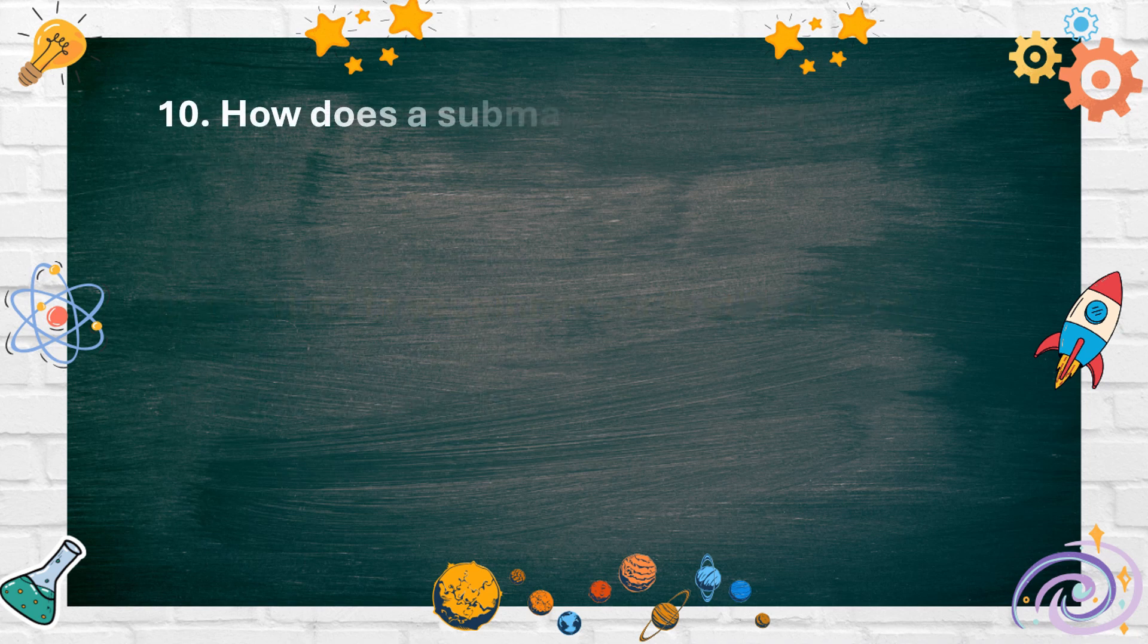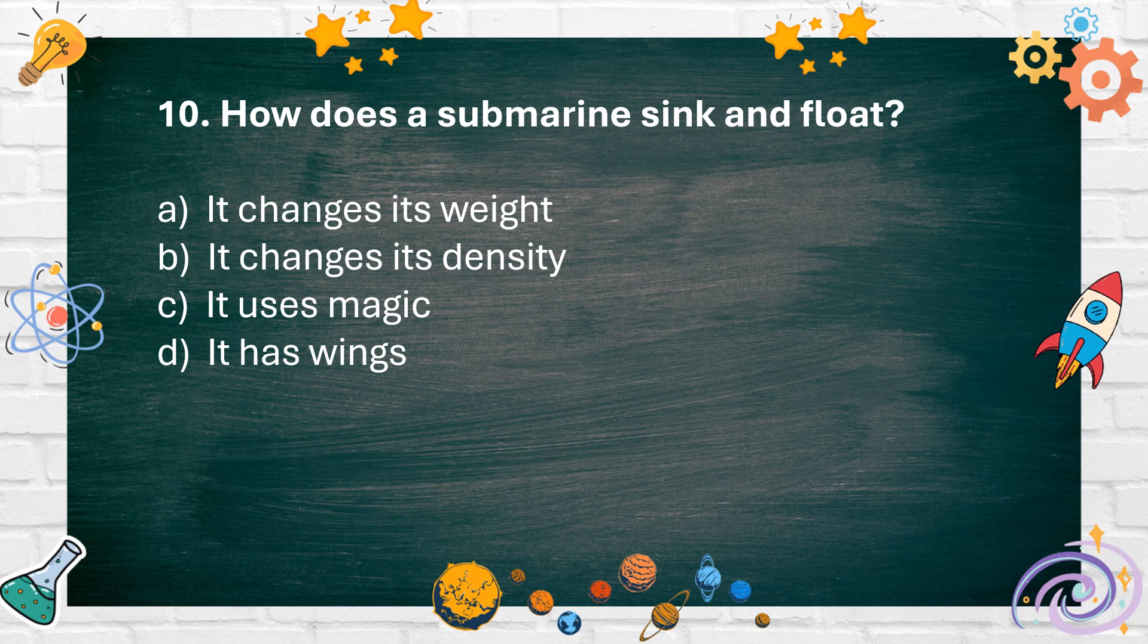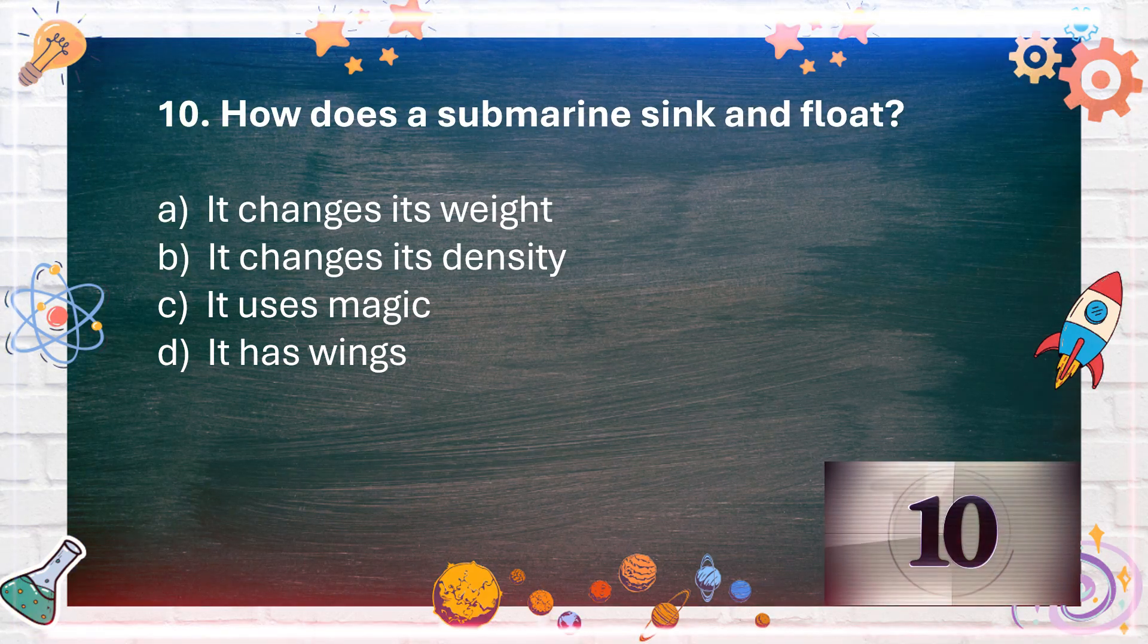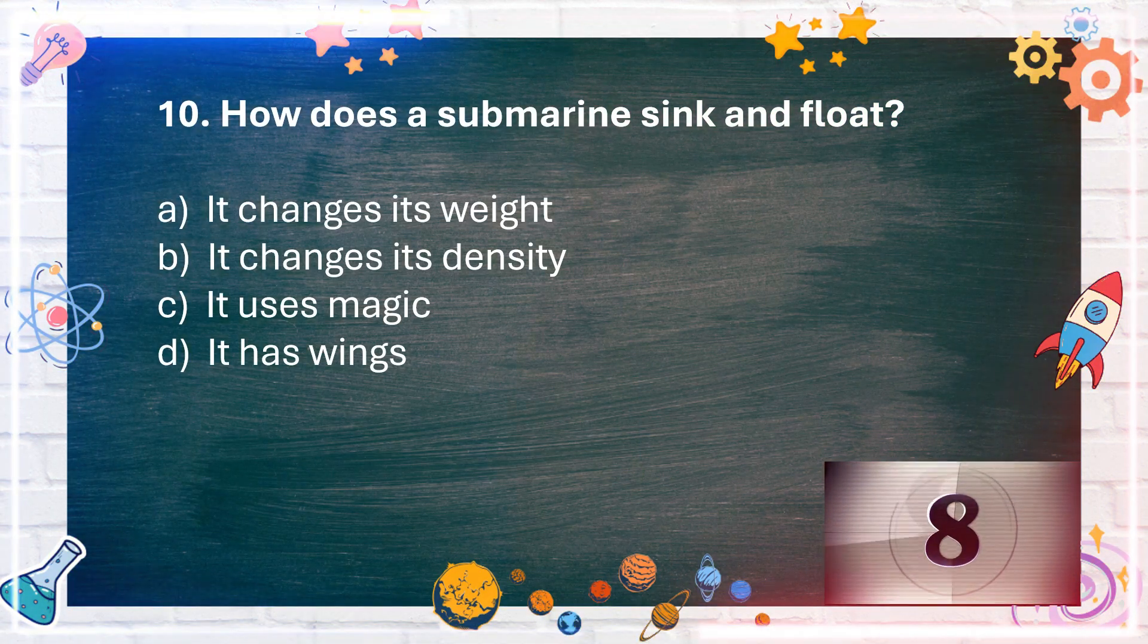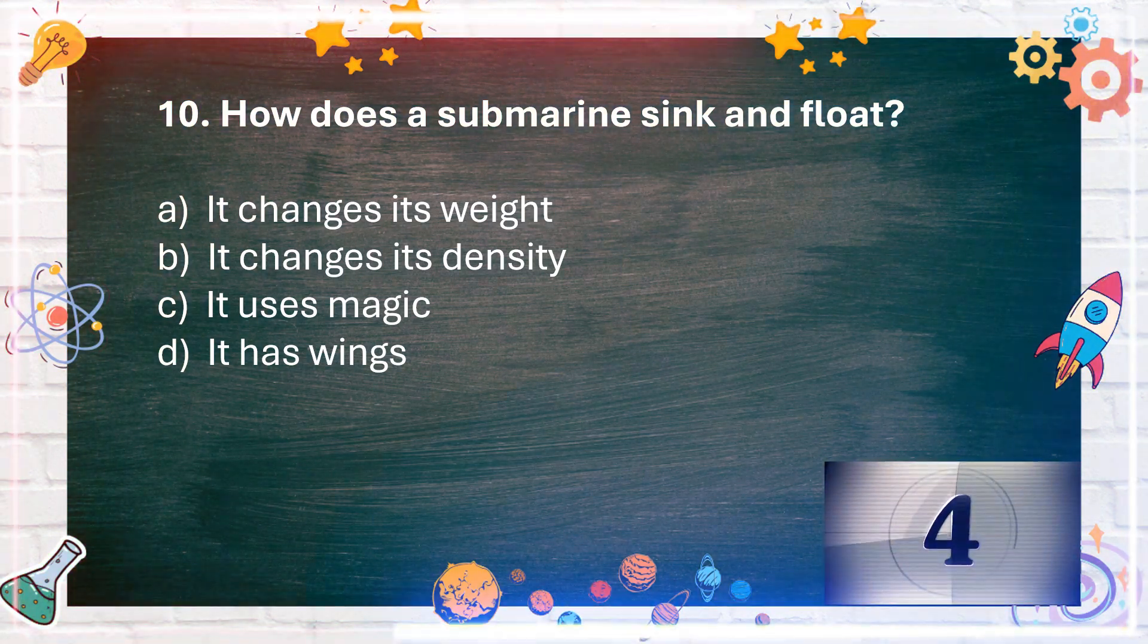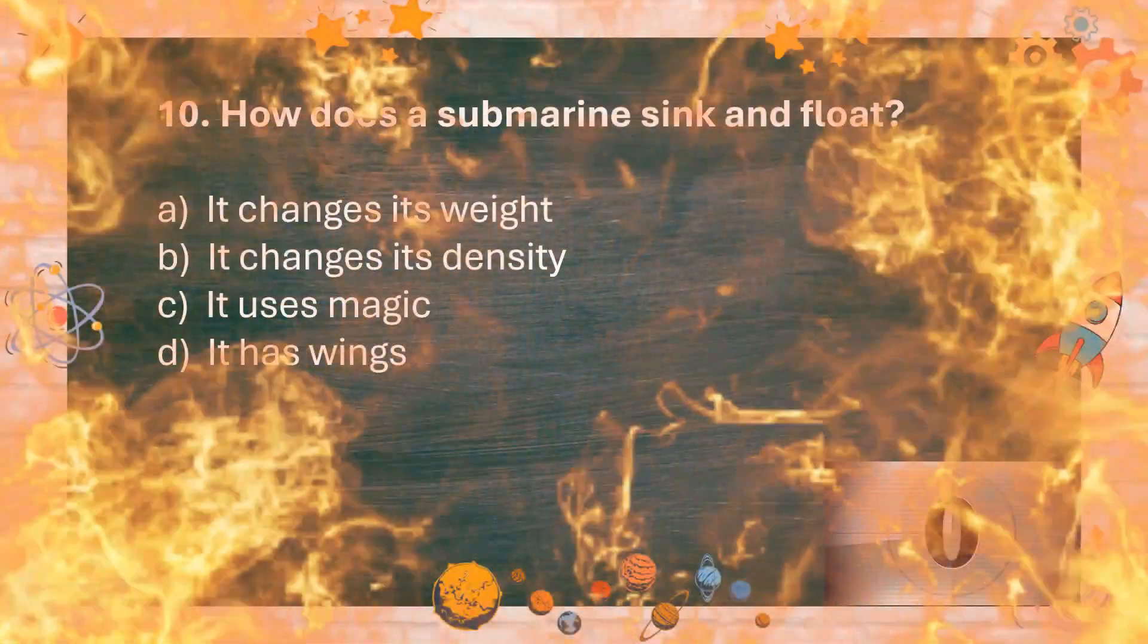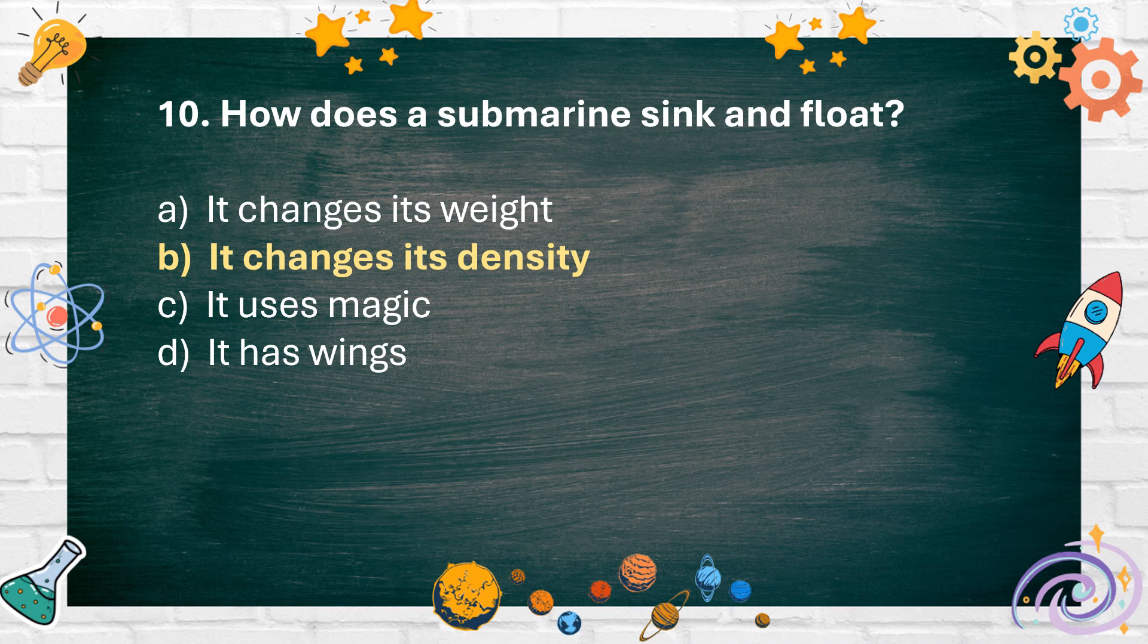Number 10: How does a submarine sink and float? A. It changes its weight. B. It changes its density. C. It uses magic. D. It has wings. The answer is B. It changes its density.